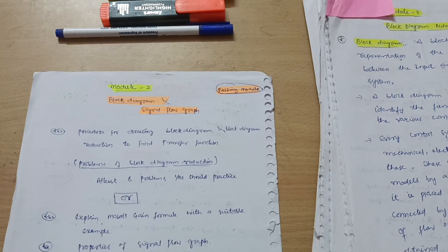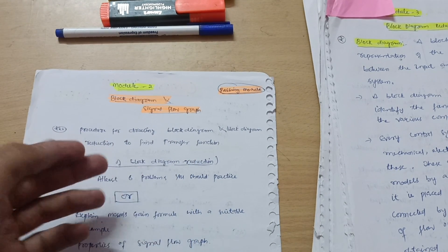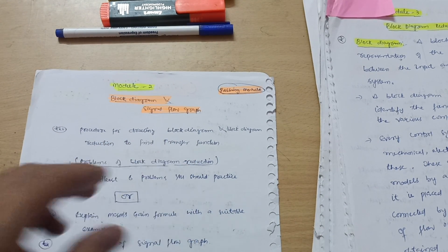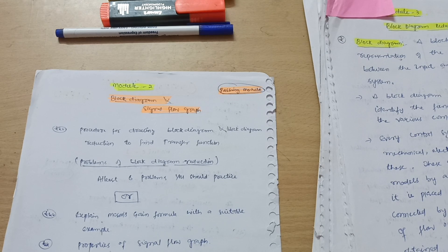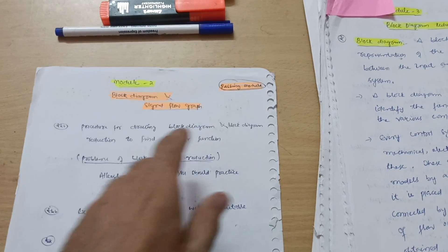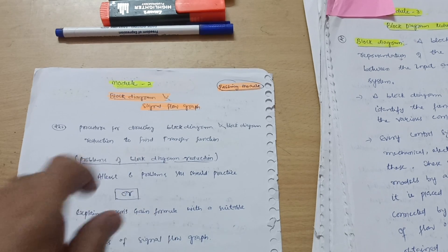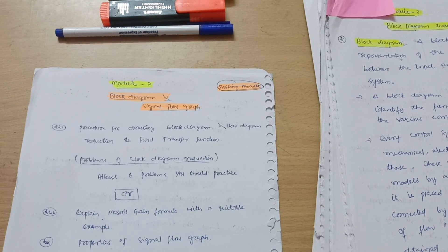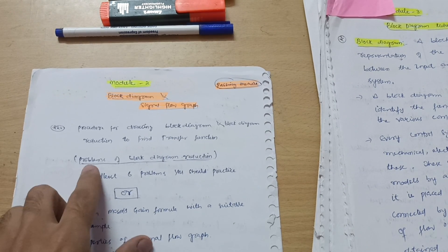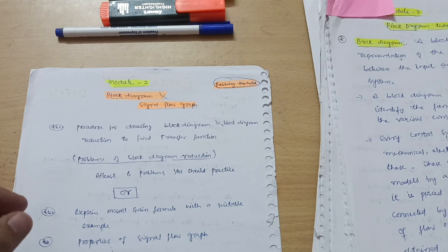In Module 2, one question will be on theory — the procedure for drawing a block diagram, or simply the rules for drawing a block diagram. There are seven rules which you have to write. Block diagram reduction to find the transfer function may also be a theoretical question in this portion.